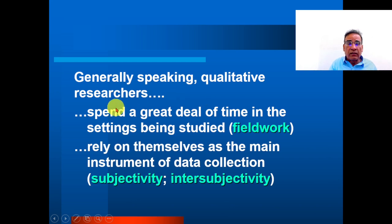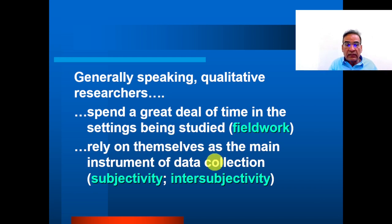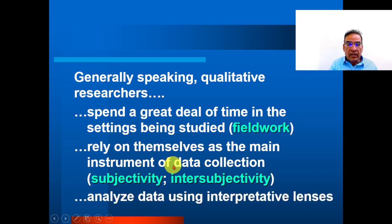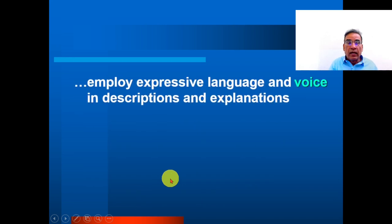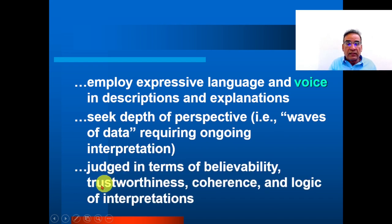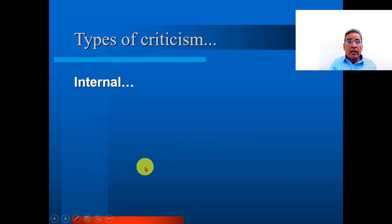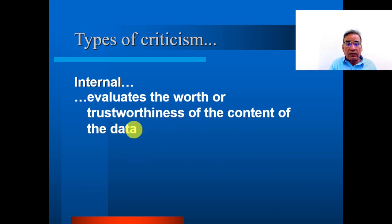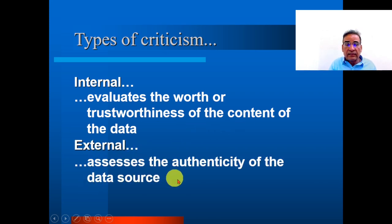Generally speaking, qualitative researchers spend a great deal of time in the setting — that is fieldwork. They analyze themselves as the main instrument of data collection, using subjectivity and intersubjectivity. They analyze data using an interpretive lens, apply expressive language and voice in descriptions and explanations, seek depth perspectives through waves of data requiring ongoing interpretation, and judge in terms of vulnerability, trustworthiness, coherence, and logic of interpretation. Types of criticism: internal — evaluate the worth or trustworthiness of the content of the data; external — assess the authenticity of the data source.